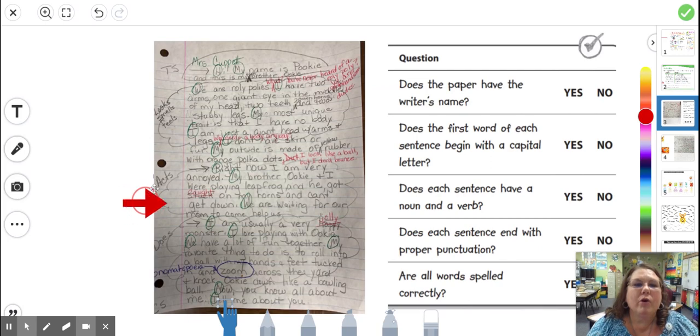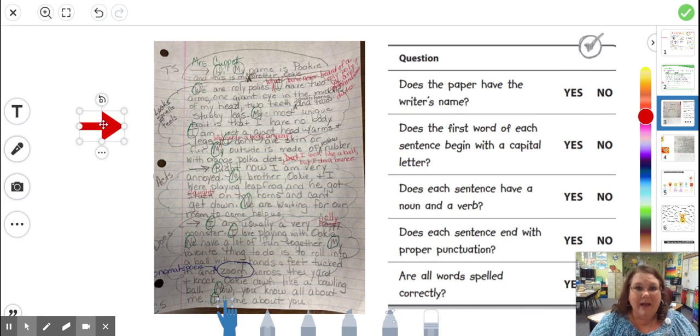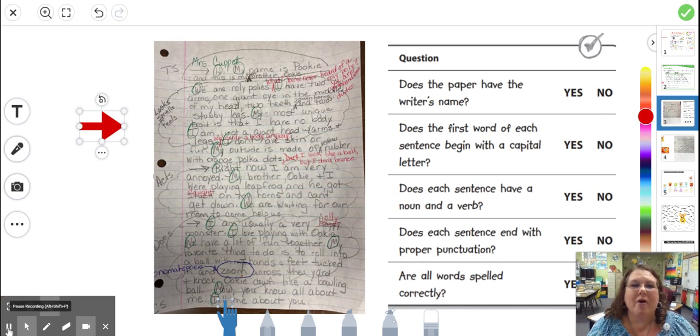So now we're going to go and we're going to circle every time we use the word I. The pronoun I. So stop the video and I want you to circle every time you use the word I. Not the letter I, the word I. And make sure it's capitalized. Stop the video and do that now.